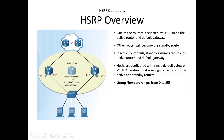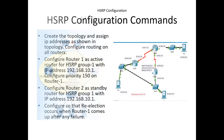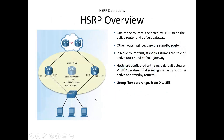In HSRP there is a virtual router with a virtual IP. This virtual IP needs to be configured as the default gateway on the PCs. We will not configure the default gateway as the IP address of Router 1 (10.2) or Router 2 (10.3). Instead we configure the virtual IP, 10.1, as the default gateway on all PCs, because R1 as the active router takes the identity of the virtual router.